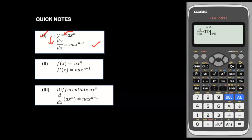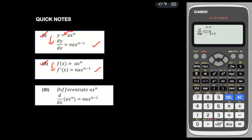If the question gives the function as f(x) = AX to the power N, then the first derivative is written as f'(x) = NAX to the power N minus 1. Similarly, if they ask you to differentiate AX to the power N, you write d/dx of the expression, which equals NAX to the power N minus 1. It's the same formula across all notations.